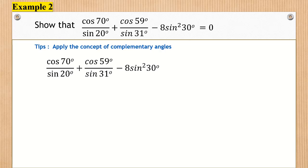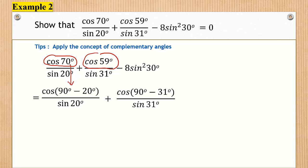We start from the left-hand side. First, we are going to convert cosine 70 degrees in the form of cosine of 90 degrees minus 20 degrees. We apply the same thing for cosine 59 degrees. We change to cosine of 90 degrees minus 31 degrees. And for sine 30 degrees, we know that is equivalent to 1 over 2.